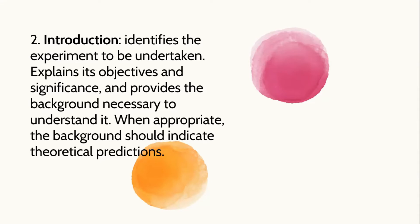Second is the introduction. It identifies the experiment to be undertaken, explains its objectives and significance, and provides the background necessary to understand it. When appropriate, the background should indicate theoretical predictions. The introduction presents the background of the study and the research problem. It also clarifies important variables, discusses its limitations, and specifies its significance to the field of the study.